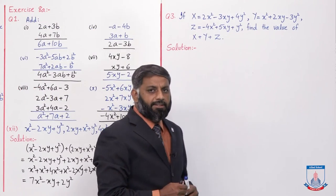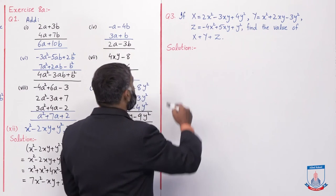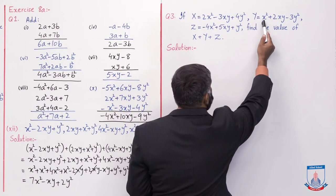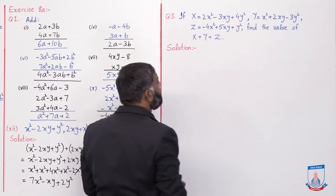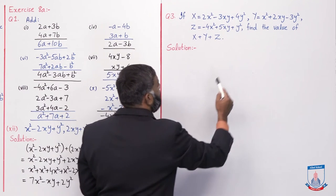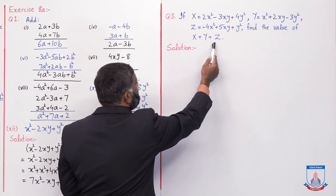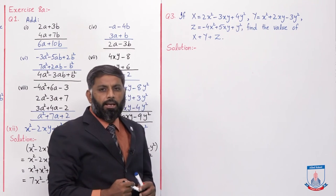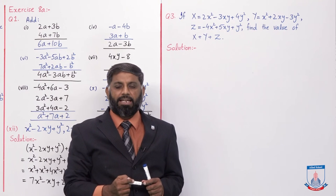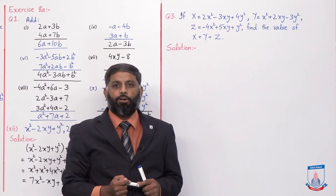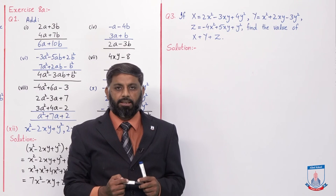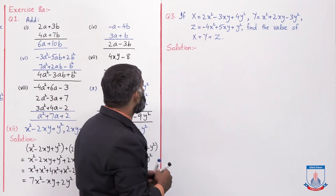Aaj ke lecture ka last question karenge. Question 3: if x = 2x² - 3xy + 4y², y = x² + 2xy - 3y², z = -4x² + 5xy + y², find the value of x + y + z. Sabse pehle x + y + z likhenge, phir teeno ki values substitute karenge, aur like terms ko ekattha likhke simplify karenge.